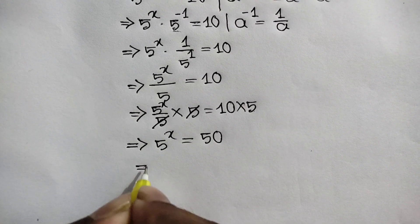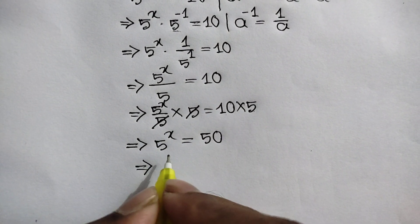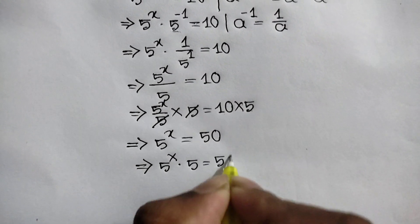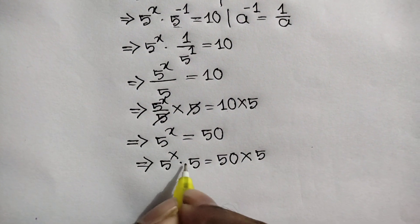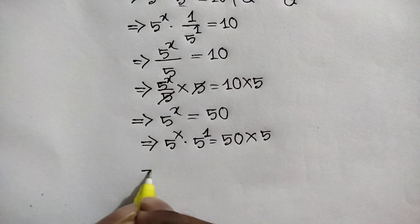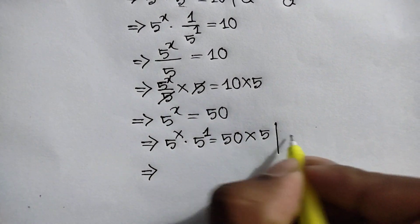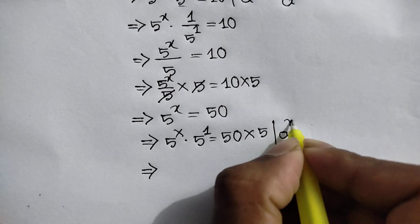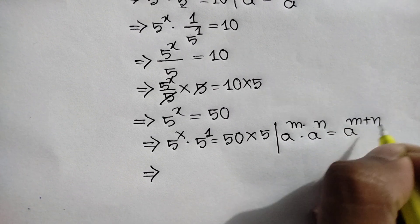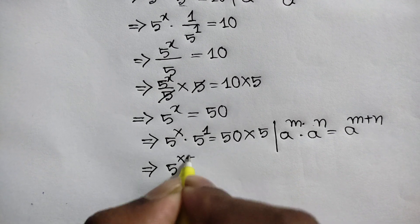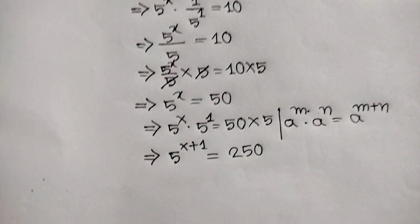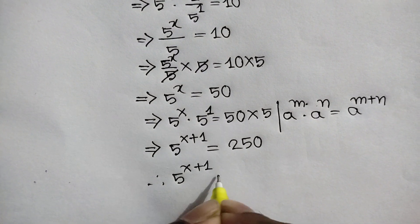Now multiplying both sides by 5 again, we write 5 to the power x times 5 is equal to 50 times 5. Here 5 is the same as 5 to the power 1. Applying the rule a to the power m times a to the power n equals a to the power m plus n, we get 5 to the power x plus 1 is equal to 250. So 5 to the power x plus 1 is 250, and this is our final answer.